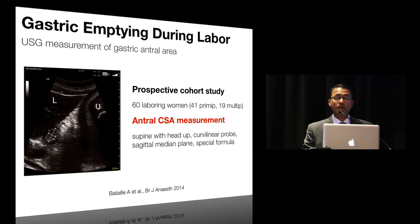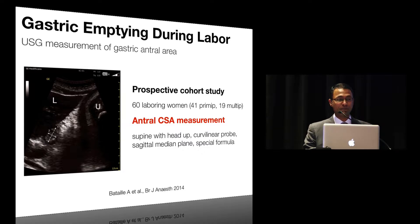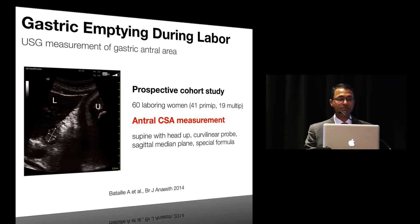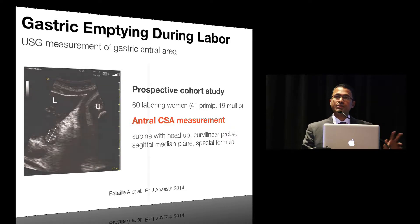The next study, again using ultrasound, quantifies gastric emptying during labor. Published recently in the British Journal of Anaesthesia by a similar group from France, it was a prospective cohort study involving about 60 laboring parturients, all of whom received epidural analgesia. The authors measured the antral cross-sectional area as a surrogate marker for gastric volume.